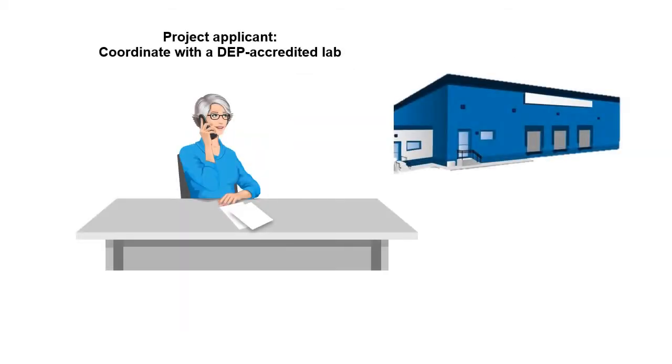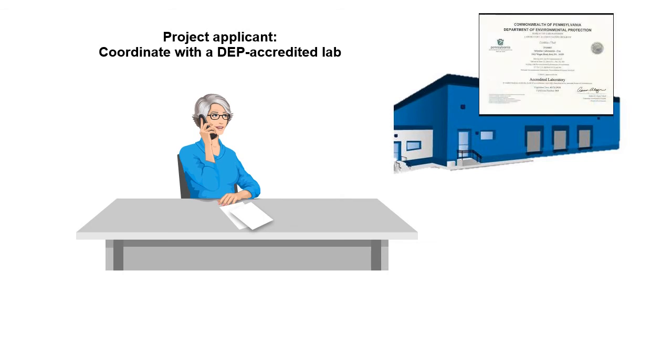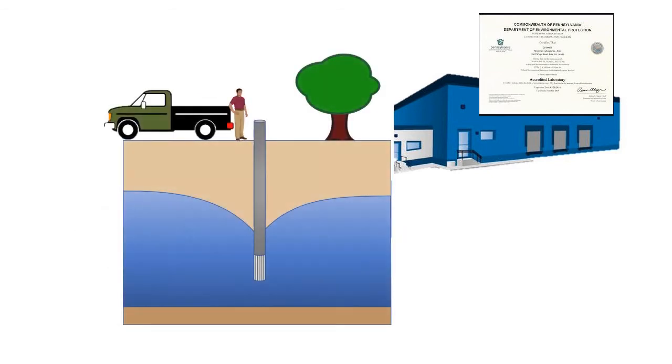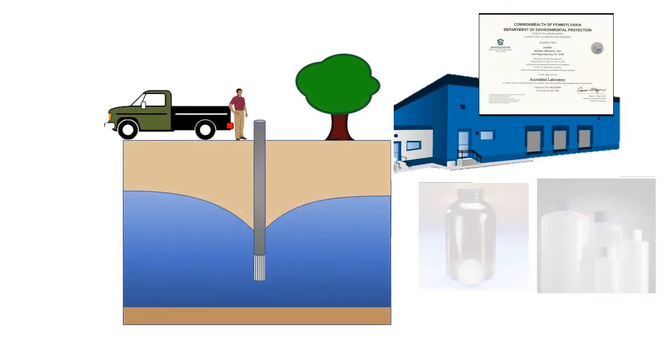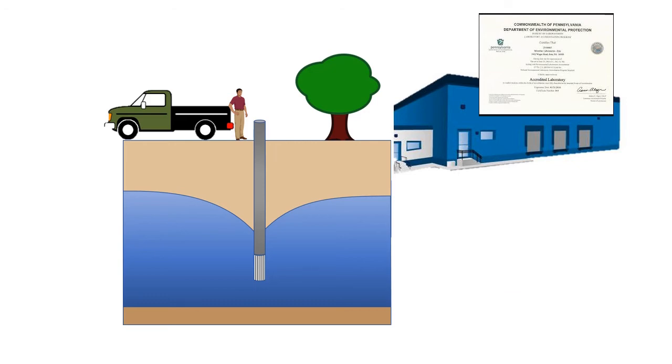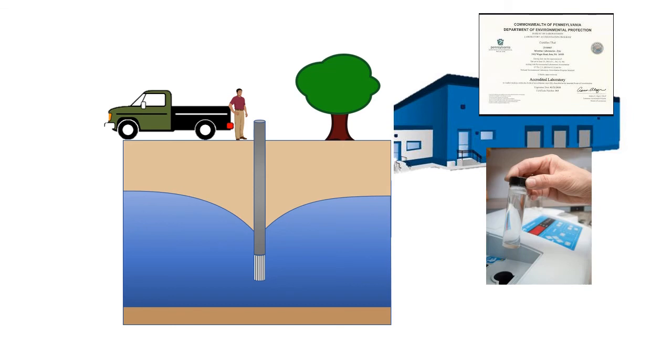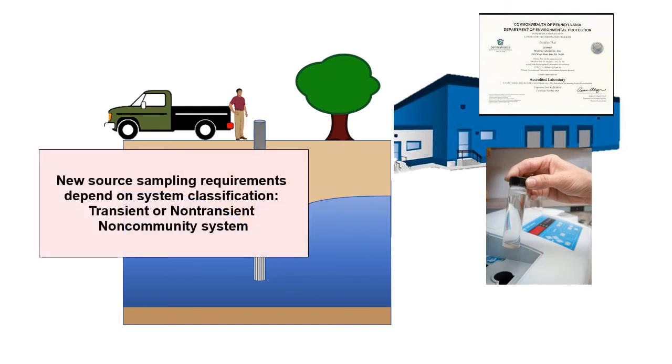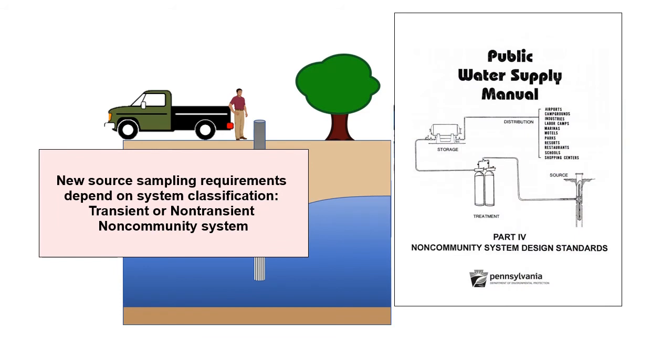It is important to note that prior to the pumping test, the project applicant must coordinate with a DEP accredited lab regarding water quality samples that are collected toward the end of the pumping test. Samples should be collected in laboratory issued bottle wear and they are typically collected by the well driller, the laboratory, or the project applicant. The project applicant must make sure that the laboratory analyzes the samples for the correct parameters, which depends on if your system is classified as a transient or a non-transient system. Details on the applicable new source sampling requirements are provided in the Public Water Supply Manual, Part 4, Non-Community System Design Standards.